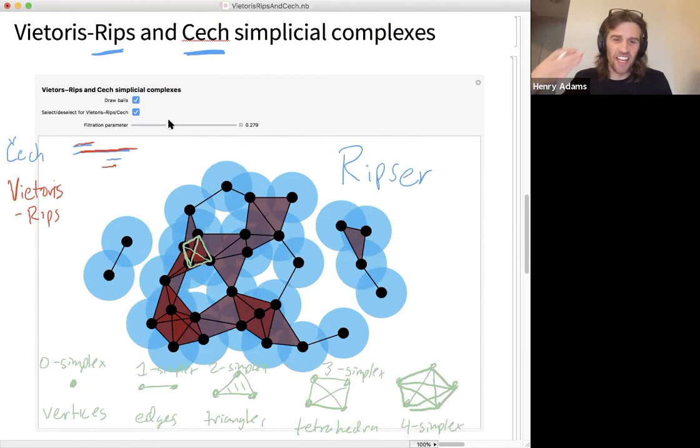So vertices, edges, triangles, and tetrahedron, you've seen before and you've thought about. But simplices, these building blocks, exist in all dimensions. And yeah, the Čech complex will contain a four-simplex when you have five balls that have a point of mutual intersection. And the Vietoris-Rips complex will contain a four-simplex whenever all ten of these edges here are present.